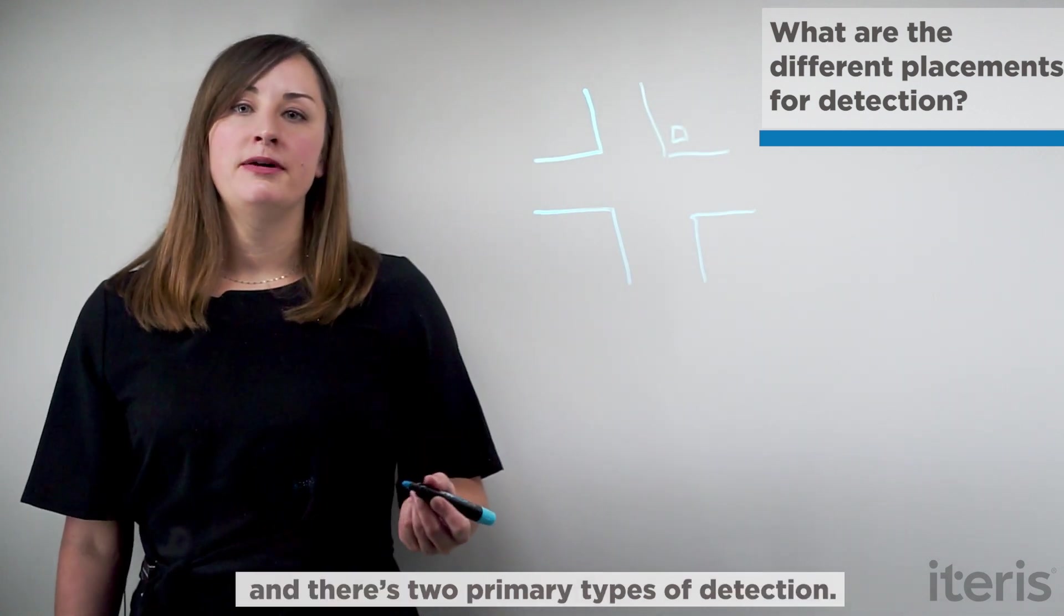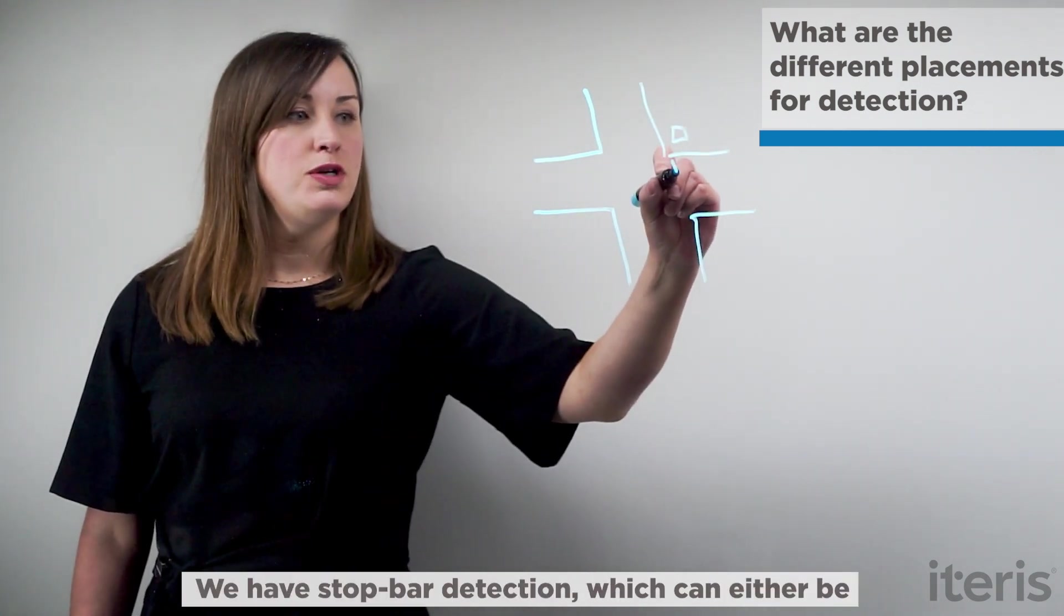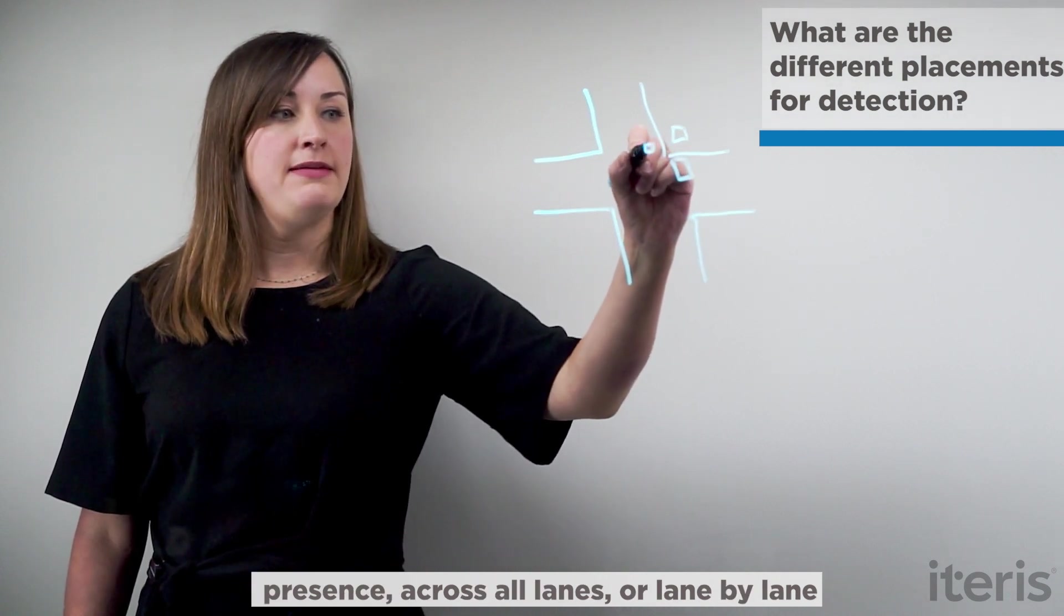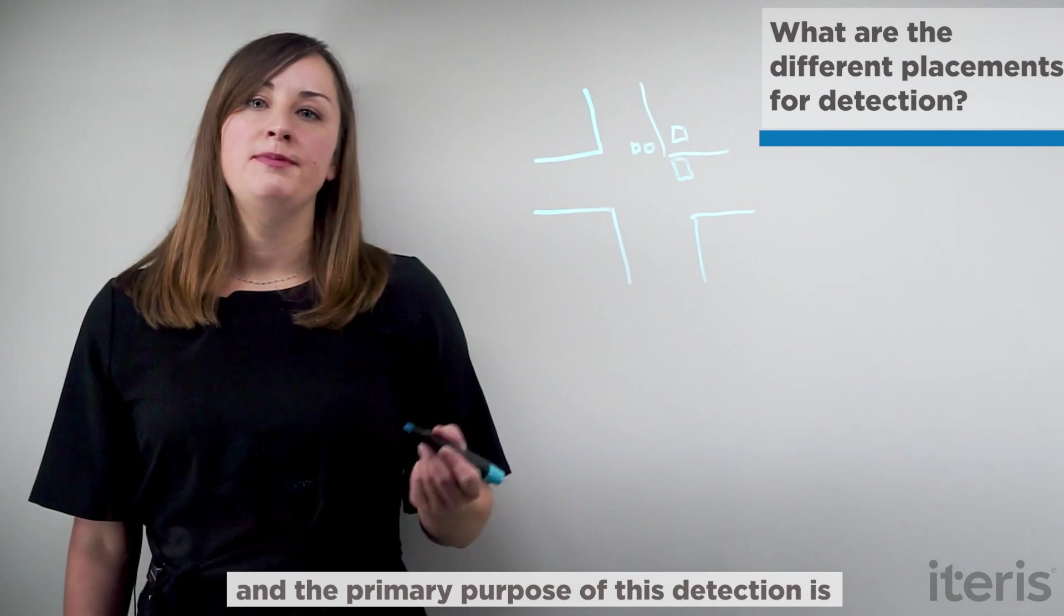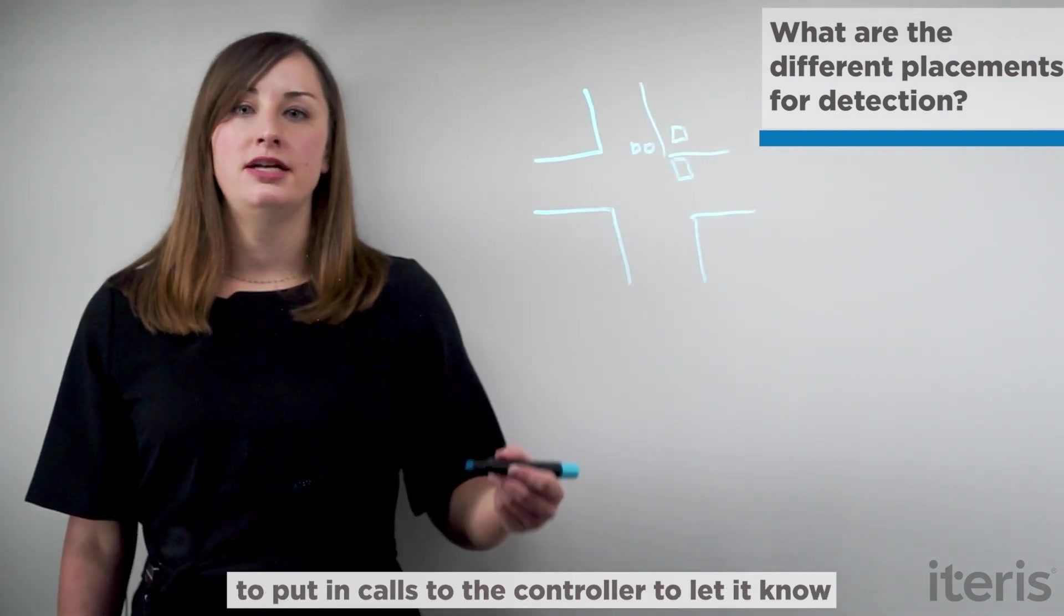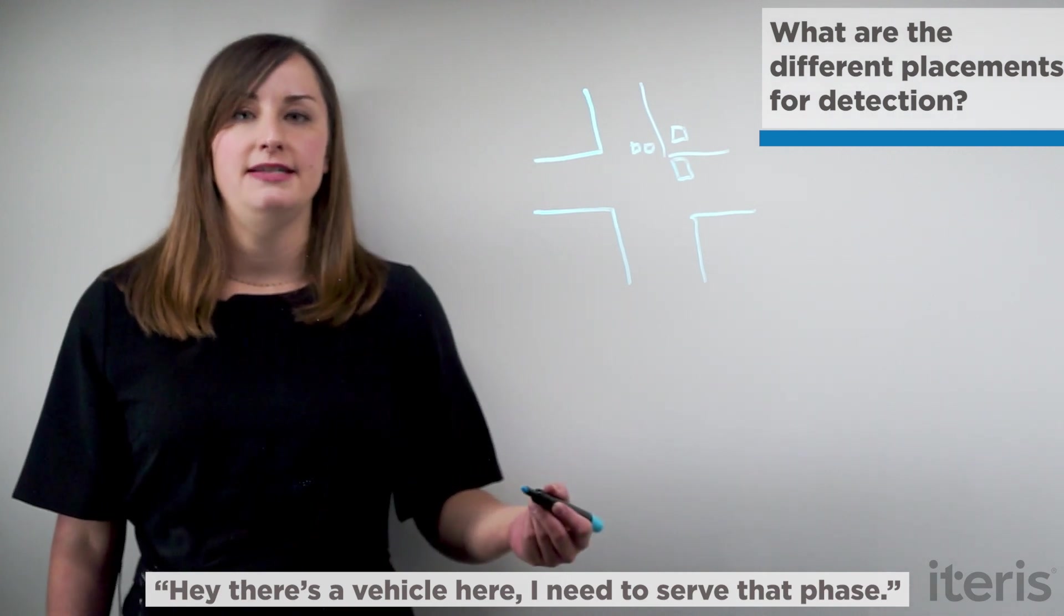There's two primary types of detection. We have stop bar detection, which can either be presence across all lanes or lane by lane. And the primary purpose of this detection is to put in calls to the controller to let it know, hey, there's a vehicle here, I need to serve that phase.